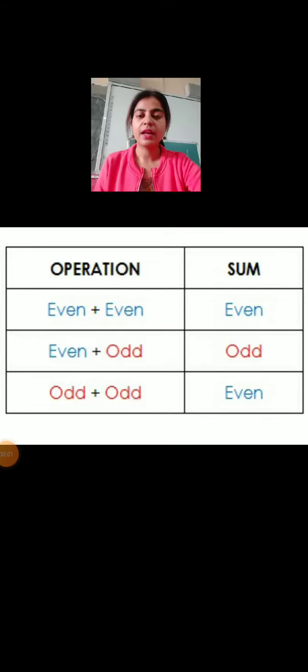Students, now we know what are even and odd numbers. If you remember, even numbers are divisible by 2, they make perfect pairs or groups and odd numbers are not divisible by 2 and they do not make perfect pairs.